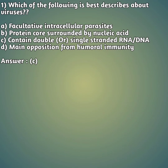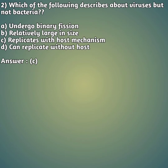Second question: which of the following describes a virus but not bacteria? Option A: undergo binary fission. Option B: relatively large in size. Option C: replicates with host mechanism. Option D: can replicate without host. The right answer is C — replicates with host mechanism. This is what differentiates viruses from bacteria; viruses replicate using their host's mechanisms.